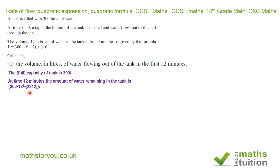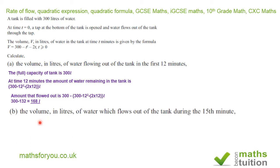So we need to apply this formula and replace t with 12. So now we've got 300 minus 12 squared minus 2 times 12. That's the amount of water left in the tank in the twelfth minute. Now we want to find the amount of water flowing out of the tank in the first 12 minutes, so we need to do some subtraction from the original 300 liters. What's left is this one here, and when you subtract you get 168 liters. That's the answer for part one.